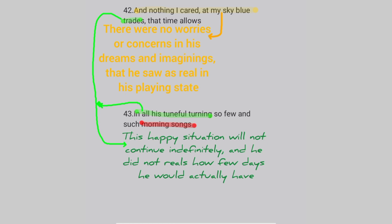Lines 42 and 43: 'And nothing I cared at my sky blue' — it means there were no worries or concerns in his dreams and imaginings that he saw as real in his playing state. 'Trades and in all his tuneful turnings' means this situation will not continue indefinitely, and he did not realize how few days he would actually have. Morning songs will be interpreted in the next slide.